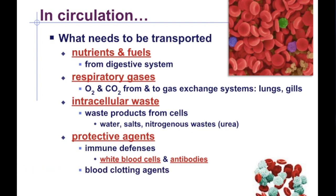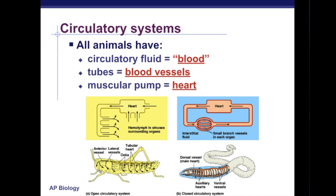Blood clotting agents — the platelets found in your blood — are important to circulate in the event of injury. They move by positive feedback to the site of injury, as well as your regulatory molecules, that is your hormones, which are released in response to specific stimuli. A circulatory system in animals has three basic components: a circulatory fluid, a set of interconnecting vessels, and a muscular pump.